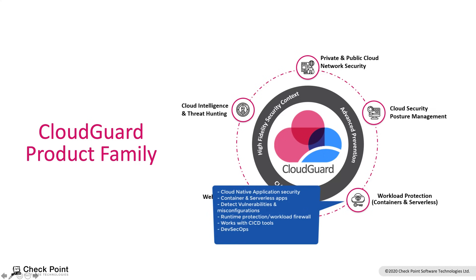On the lower right side, we have CloudGuard Workload Protection, which is the focus of today's session. It focuses on cloud-native application security — we're talking about containers and serverless, and the serverless bit is the focus of today's session. CloudGuard Workload Protection can assess your workloads for misconfigurations and vulnerabilities, and enable runtime protection on the workload as well, which basically acts like a firewall.